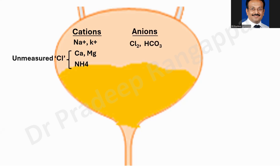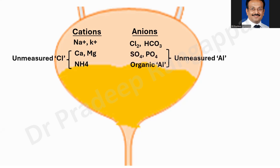The anions: in serum anion gap it is sodium minus chloride plus bicarbonate, but in urine anion gap we don't take bicarbonate — it is sodium plus potassium minus chloride. Measured anions in urine are chloride and bicarbonate. Unmeasured anions are sulfates, phosphates, and organic anions. To maintain electrical neutrality, there has to be a balance between cations and anions.